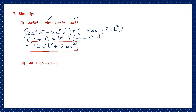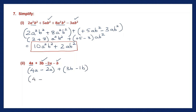Next question: 4a plus 3b minus 2a minus b. We have different like terms: 4a and minus 2a form one group, 3b and minus b form another. So: 4a minus 2a plus 3b minus 1b. b by itself means 1. This equals 4 minus 2 a plus 3 minus 1 b, so 2a plus 2b. This is the answer.